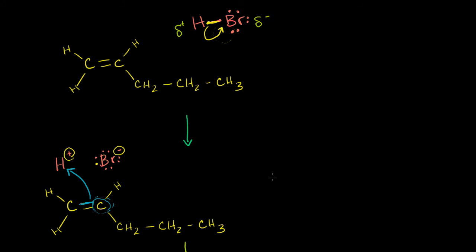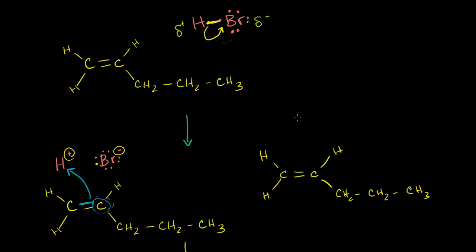Let me draw pent-1-ene again. We have a hydrogen bonded to a carbon, to a hydrogen, a double bond, bonded to a hydrogen, and then CH2, CH2, CH3. And we have our bromine with its eight valence electrons — keeping one in yellow to remember it originally came from hydrogen — so it has a negative charge. The hydrogen is really just a proton now with a positive charge and no electrons. Now, instead of the right carbon giving up its electron as we saw in the last video, let's make the left carbon give up its electron.